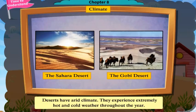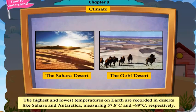Deserts have an arid climate. They experience extremely hot and cold weather throughout the year. The highest and lowest temperatures on earth are recorded in deserts like the Sahara and Antarctica, measuring 57.8 degrees Celsius and minus 89 degrees Celsius respectively.